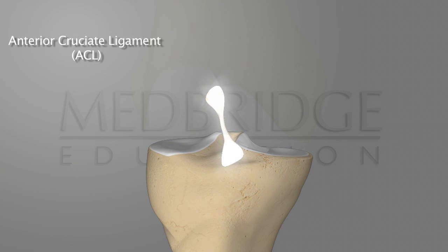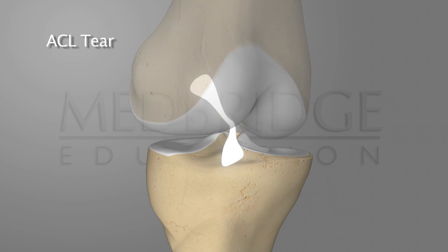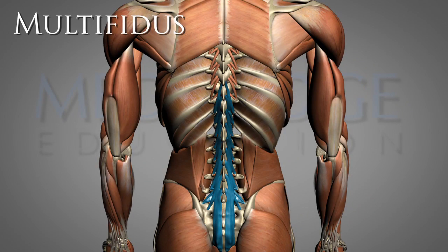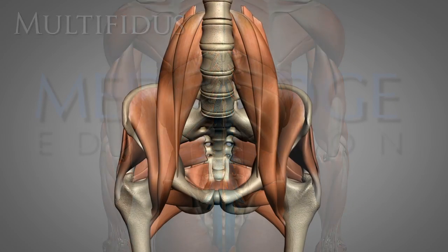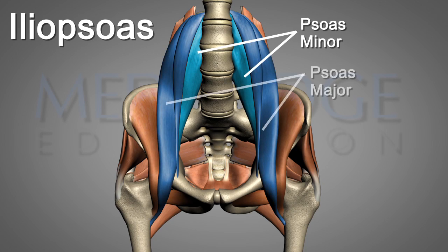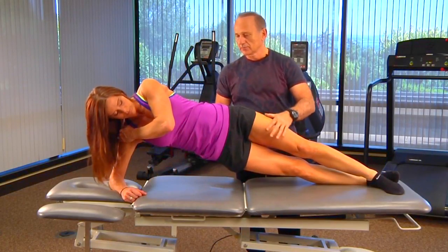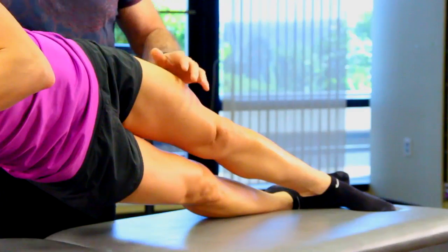This course will review the anatomy and mechanics of the lumbopelvic and hip that pertain to balance, stability, and power. An overview of dynamic visual acuity and perturbation training with emphasis on the athlete will be presented.